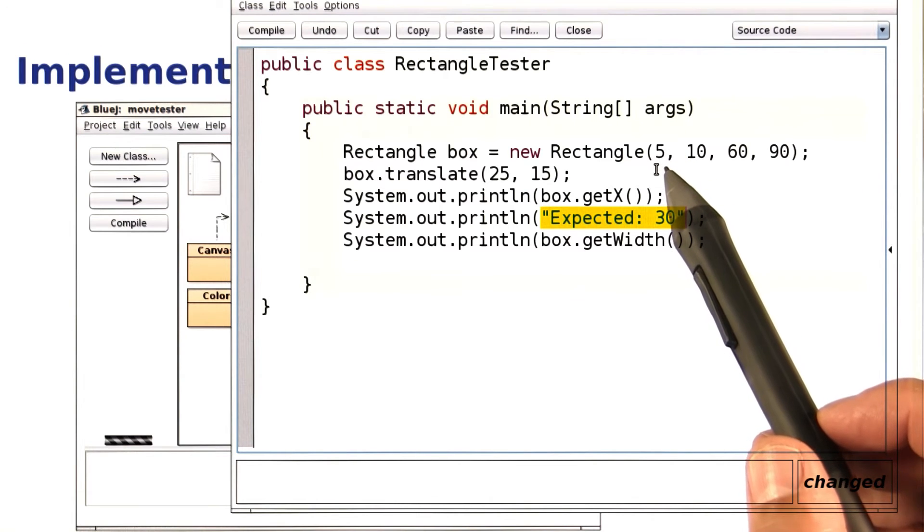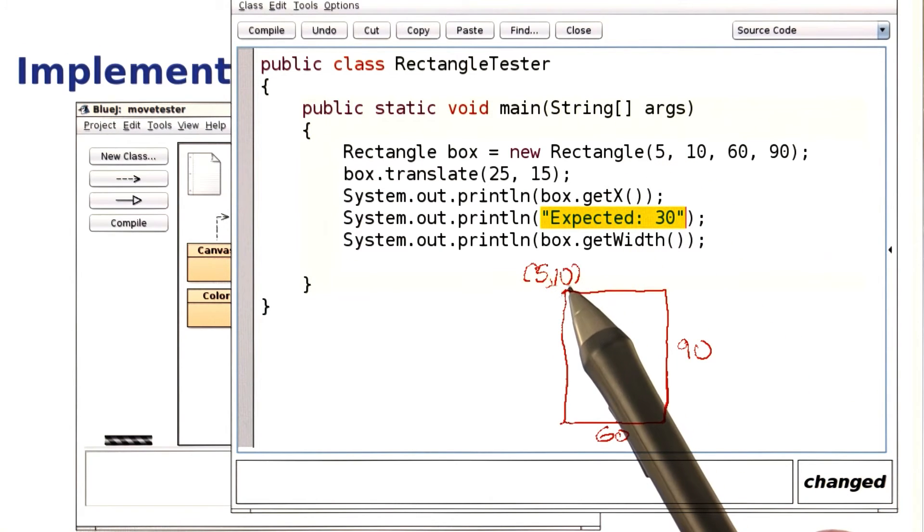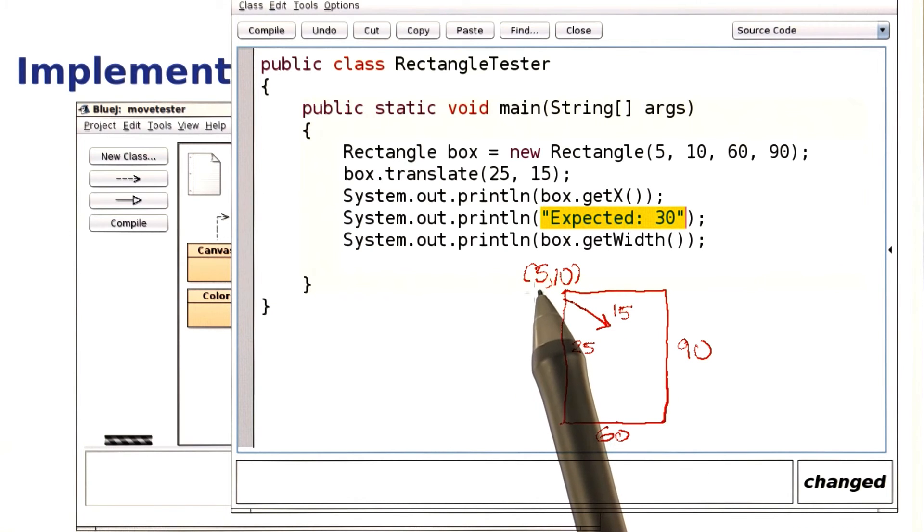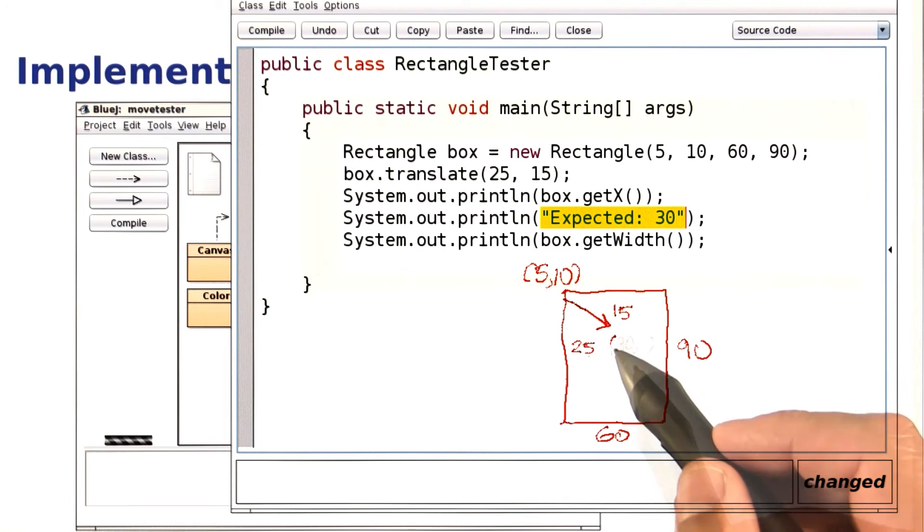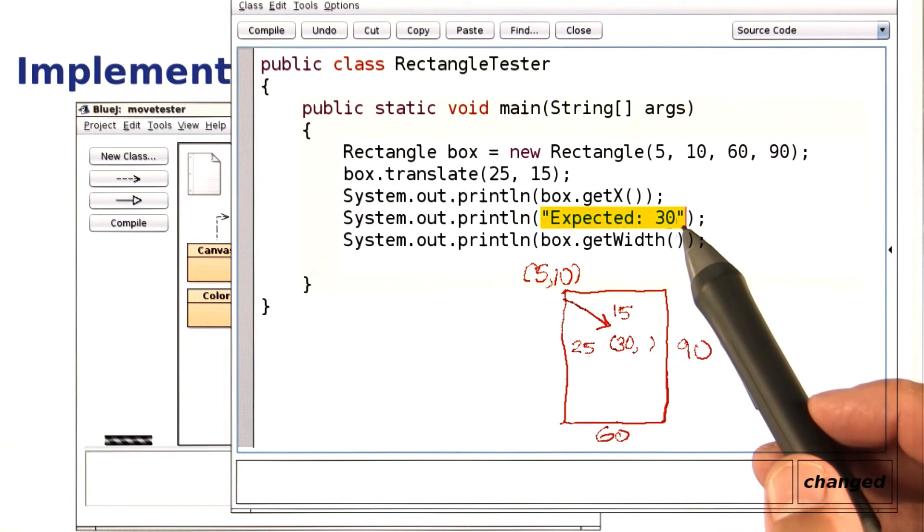The x coordinate of the rectangle is at 5, the y coordinate is at 10, and now we translate it by 25 pixels to the right and 15 pixels down. So we have 5 translated by 25 pixels, so we expect that the x coordinate is now 30 pixels, and that's what I'm putting here.